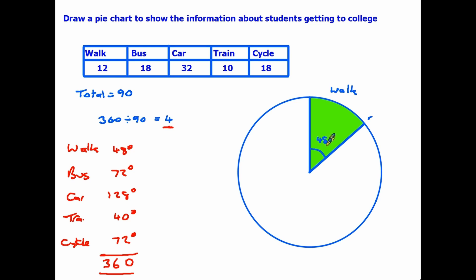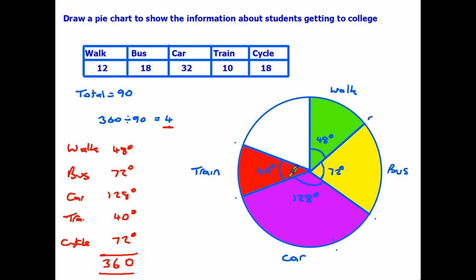And we continue around the circle using the protractor to measure the angles: 72 degrees for those traveling by bus, 128 degrees for those in cars, 40 degrees for the train travelers. And in fact, the nice thing is that as long as you've got these four accurate, the last sector is already drawn for you. Because the only sector left is the one for the people who travel to work by cycling. Therefore, and it is a good check to actually measure this at the end to show you've got all the others right, this should measure 72 degrees, and that is for the cyclists.